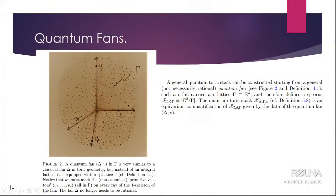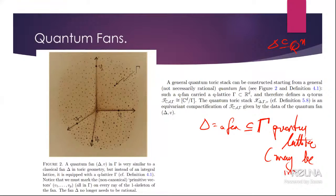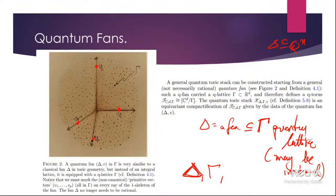A quantum fan is a classical fan, but it doesn't need to lie inside Q^N. Rather than classical fans, it lies inside a quantum lattice, which may be irrational. I need to remember the quantum lattice, the fan, and the combinatorial structure. Because there is no primitive vector at every ray, I just choose these vectors on the rays. This is a quantum fan. The quantum lattice gamma is most often dense in R^d.